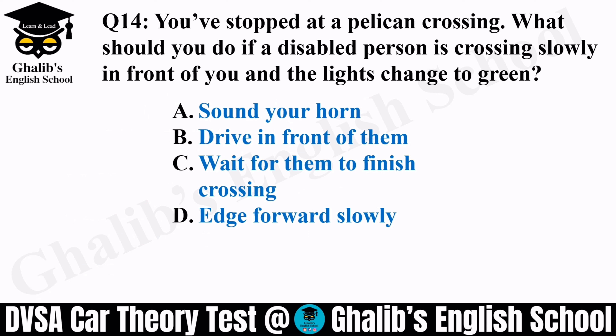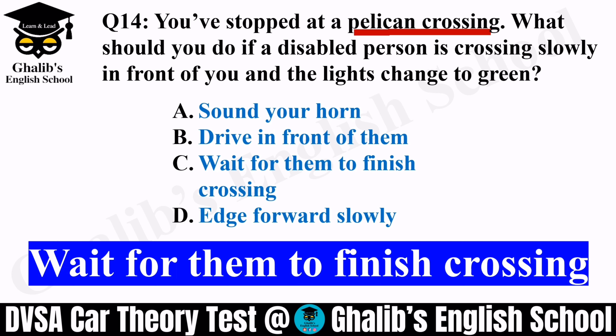Question 14. You have stopped at a pelican crossing. What should you do if a disabled person is crossing slowly in front of you and the lights change to green? At a pelican crossing, amber lights keep flashing, and if they change to green while someone is still crossing, options are: sound your horn, drive in front of them, wait for them to finish crossing, or edge forward slowly. You need to show respect — wait for them to finish crossing.